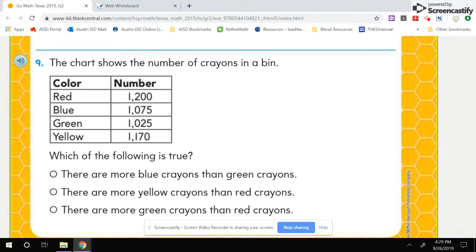So for example, number nine. The chart shows the number of crayons in a bin. Then it gives us here a chart with color and number. Which of the following is true? So we have a bunch of answer choices down below, but before we can even really look at the answers, we need to look and understand the chart better.